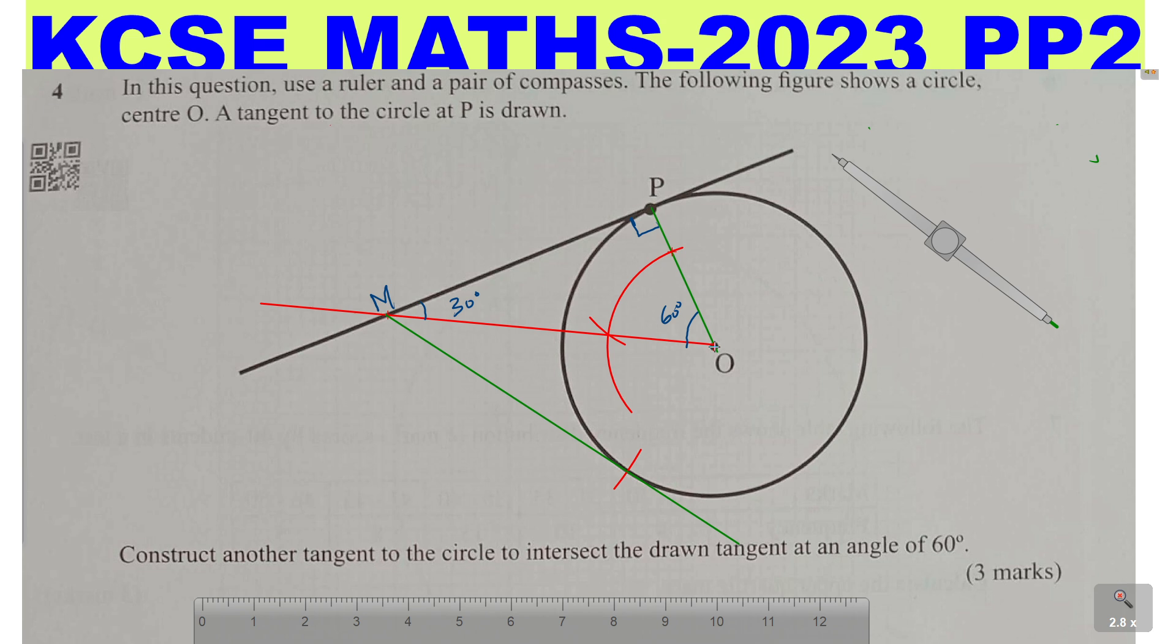If you join this point, point of contact, you'll have this one as 90 degrees, 30 degrees, and you'll have this one as 30 degrees. So you can see we've achieved the objective. We've constructed another tangent, the tangent MN, to intersect the drawn tangent at M at an angle of 60 degrees. The angle there is 30, 30, that is 60 degrees. So that is how you're supposed to work out that.